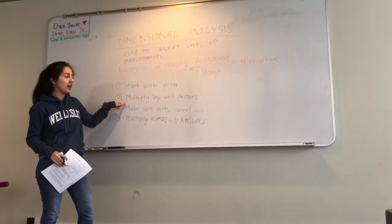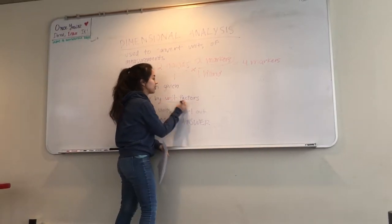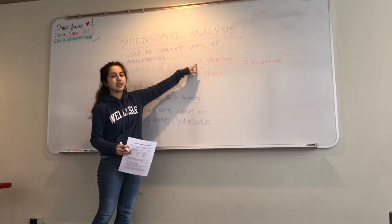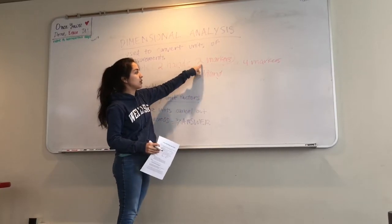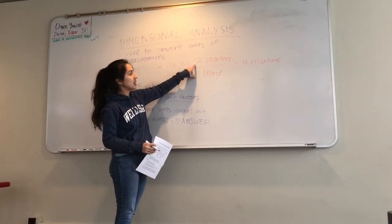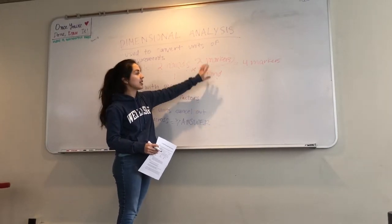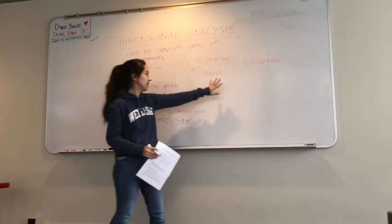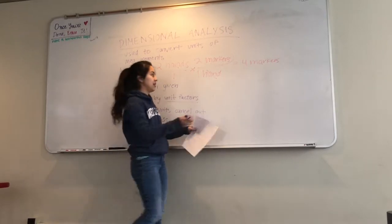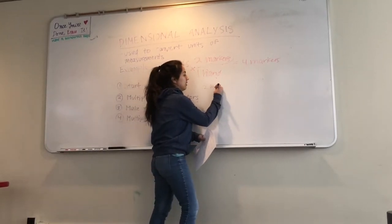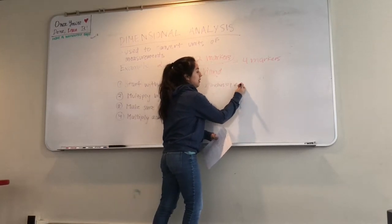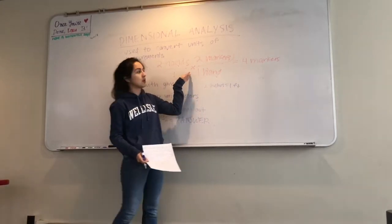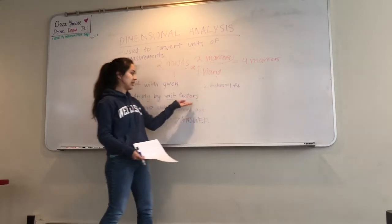The second step is that you multiply by things called unit factors. Unit factors are things that are equal to one, but you use them so that you can get the units that you want. So here, for example, we said that there are two markers in one hand. In this fraction, two markers is equivalent to one hand, and so this is essentially one, which is why we can multiply this by one and still get our answer. This is called a unit factor. Another unit factor would be that there are 12 inches in one foot. 12 inches is equivalent to one foot, so when we put it in a fraction, it's equal to one, and we're allowed to multiply our given by that to convert it into a different measurement. That's a unit factor.